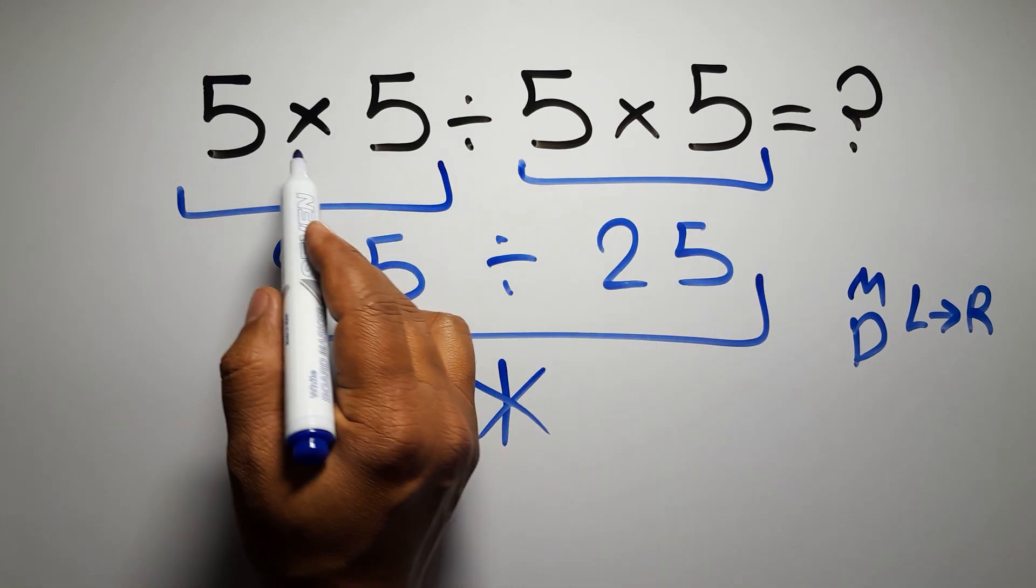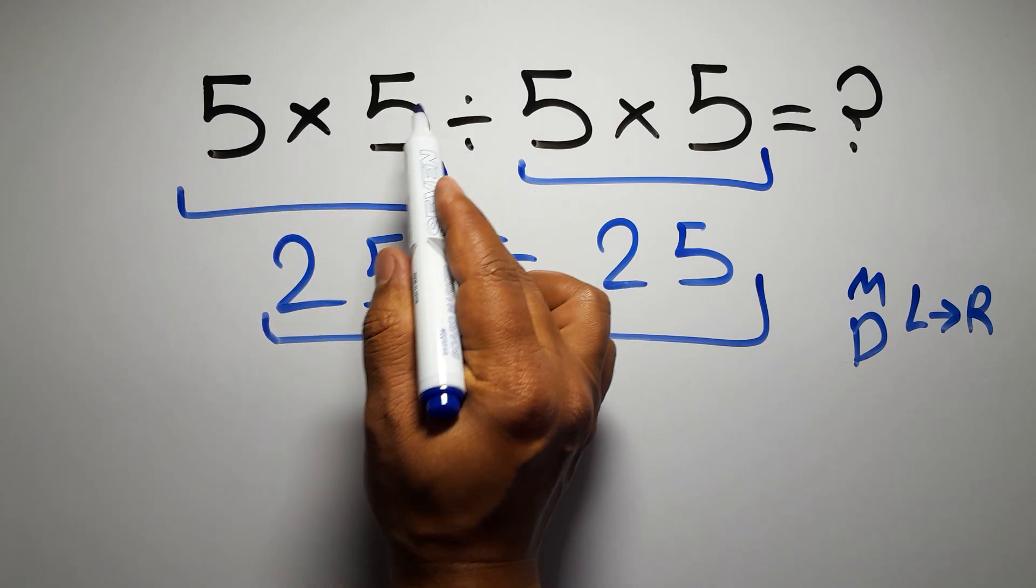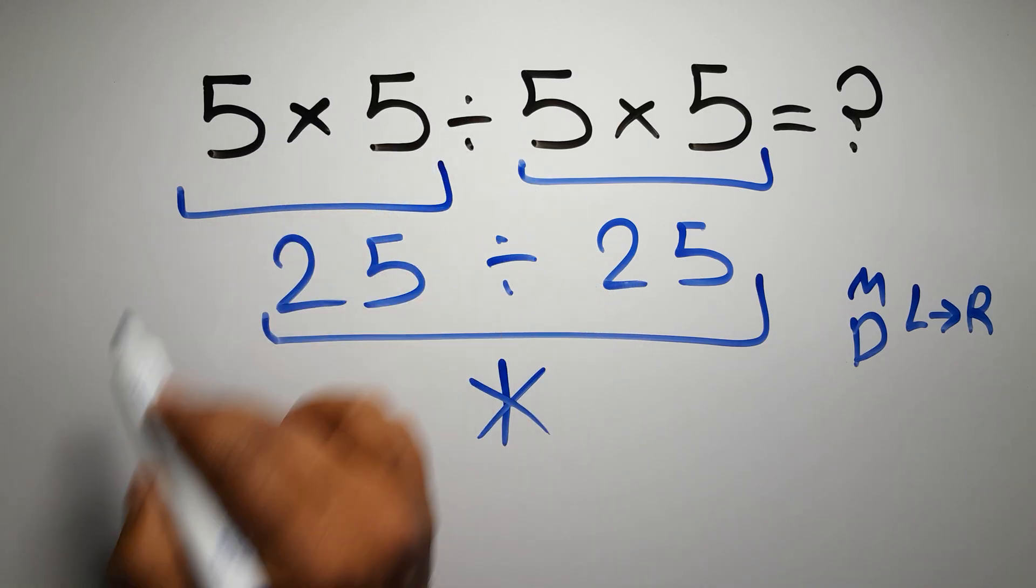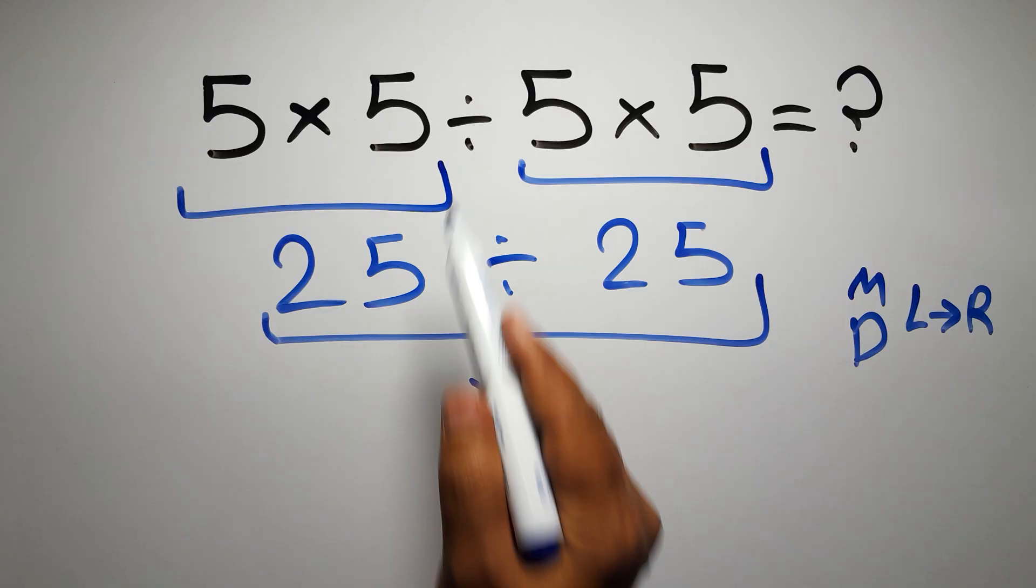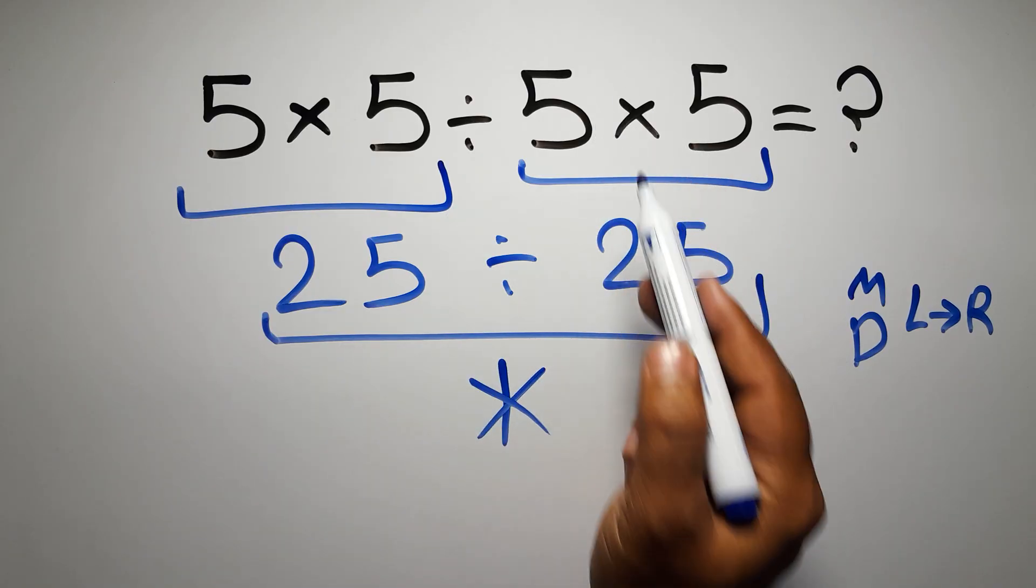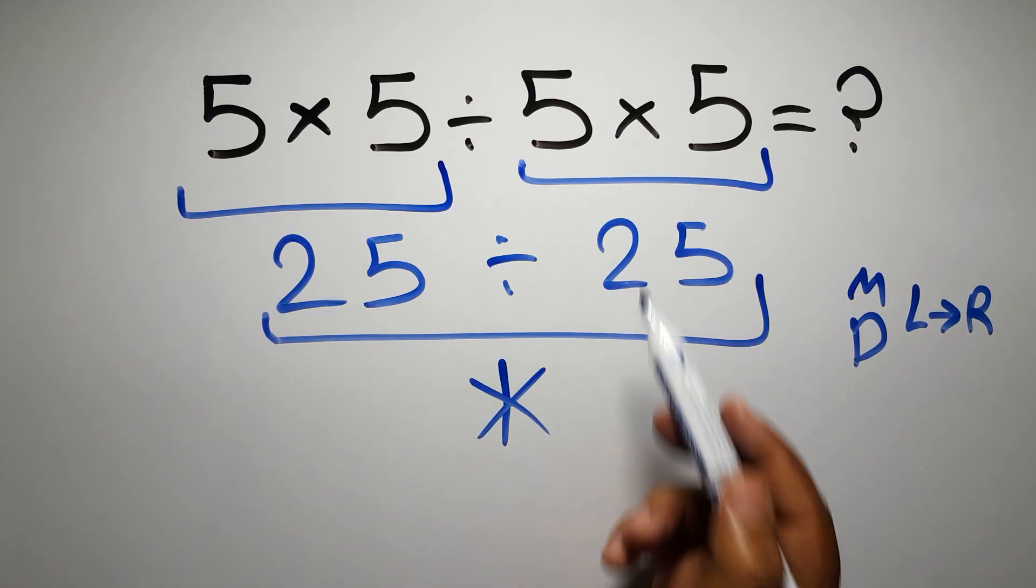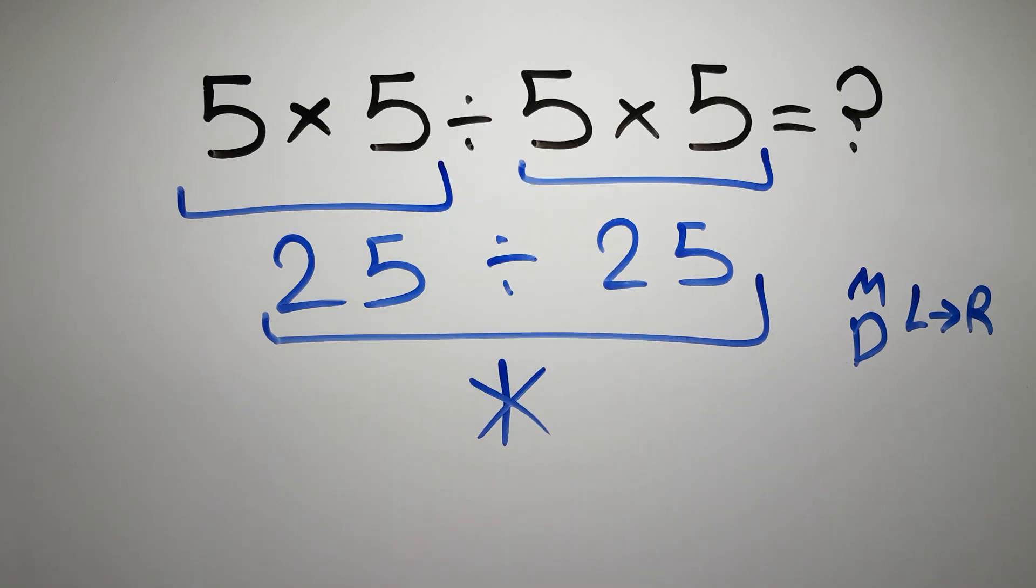That means first we have to do this division, then—excuse me—first we have to do this multiplication, then this division, and finally this multiplication. If we do this multiplication before this division, it is wrong.